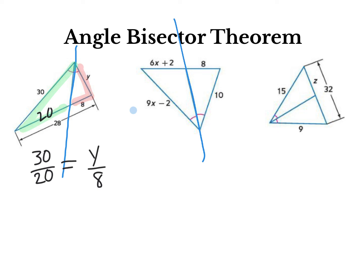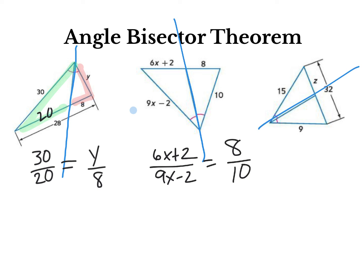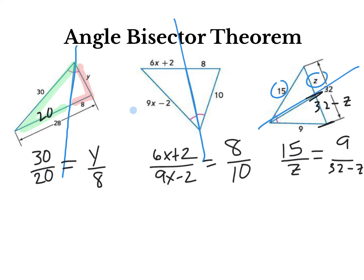So on this next example, on the left I have: 6x + 2 over 9x − 2 should equal 8 over 10. Cross multiply and solve for x. And this last one, same thing — the angle is going to cut this triangle into two different parts. We have 15 over z equals 9 over the other piece. This piece is really just the whole length minus z — just like the other problem where we got 20 by doing 28 subtract 8. Same thing here: 32 take away z is 32 minus z. Then we just cross multiply and solve.